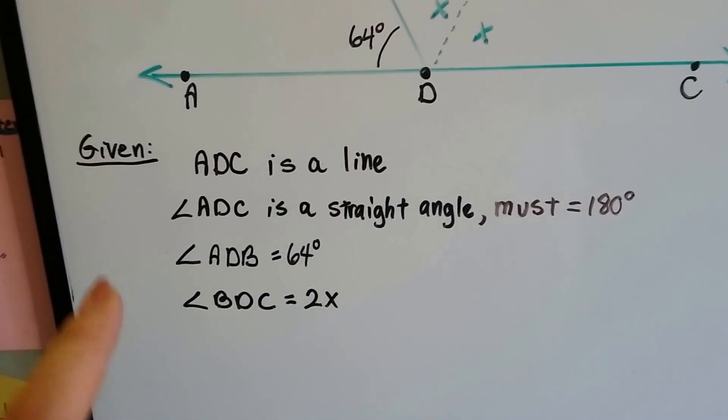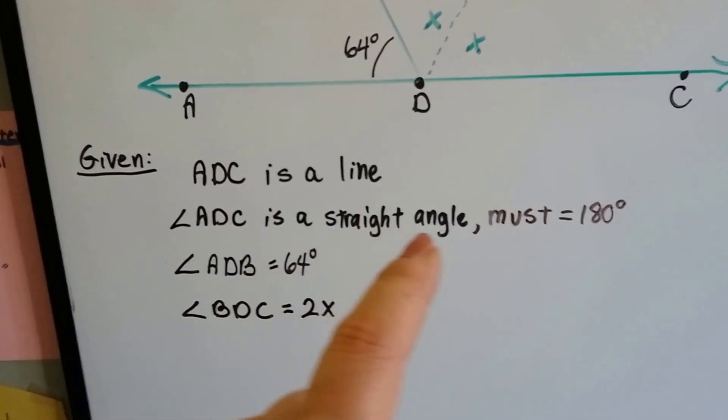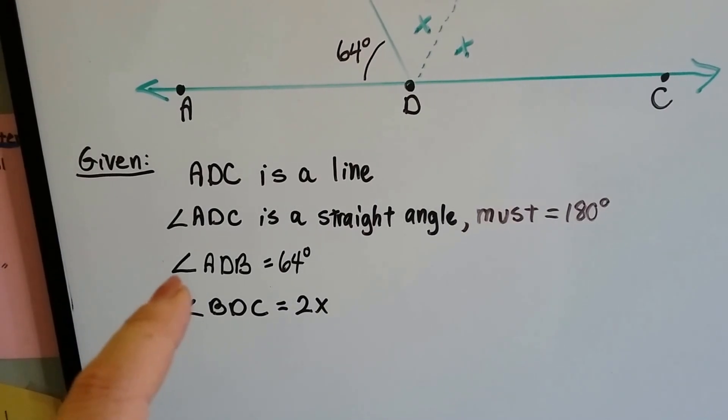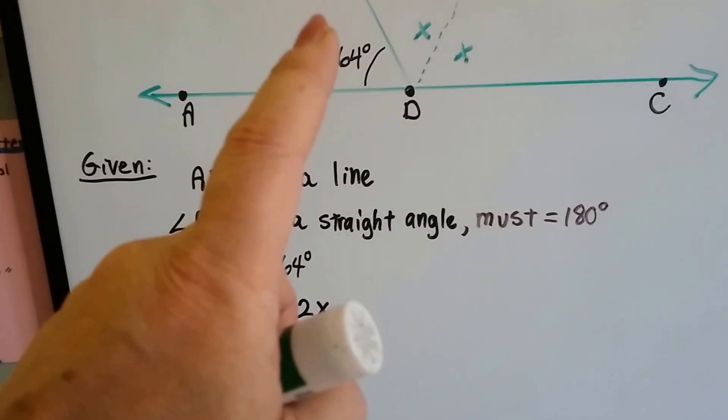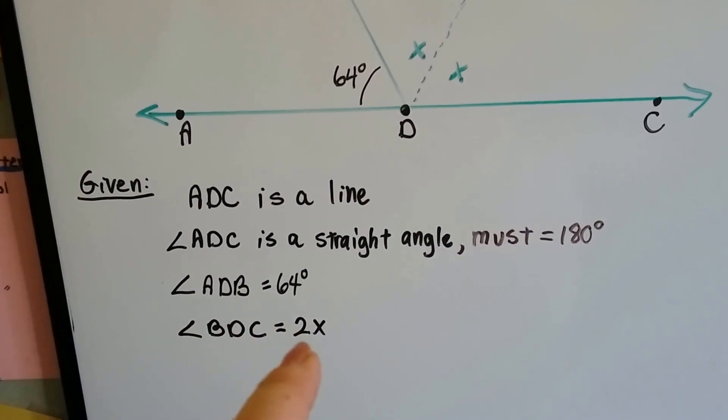So our given is A, D, C is a line, or angle A, D, C is a straight angle that must be 180 degrees. Angle A, D, B equals 64 degrees. And angle B, D, C equals 2X.